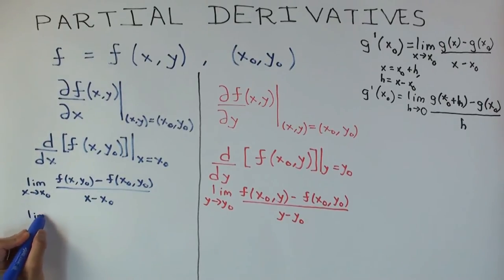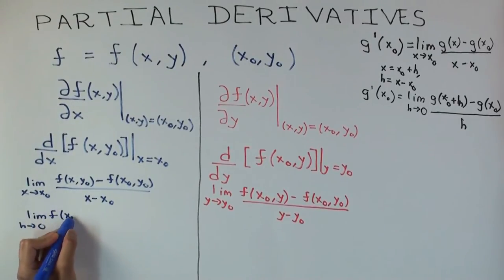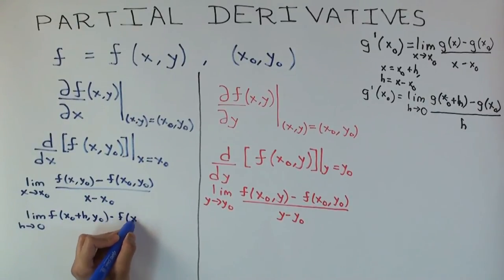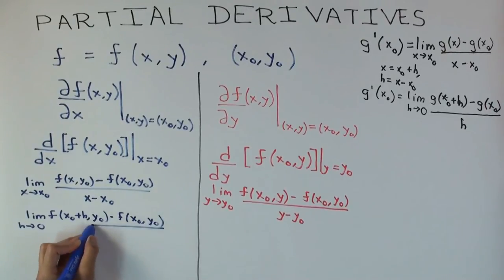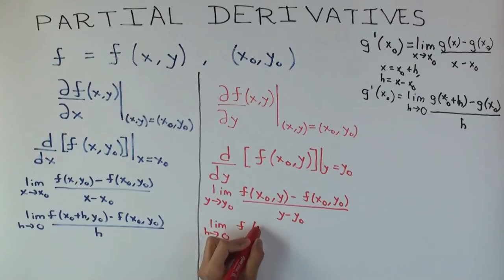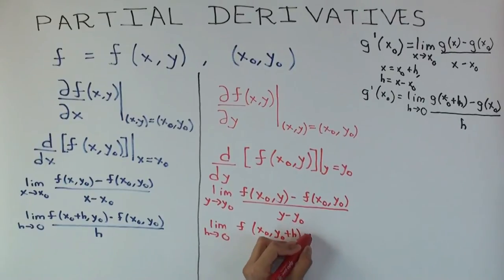This becomes limit h approaches 0, f(x0+h,y0) minus f(x0,y0) over h. The difference in the values is h. And the other side is going to be similar. It's a limit as h approaches 0, but this h is now going to add to the y coordinate.